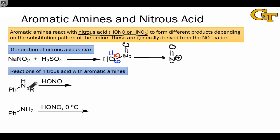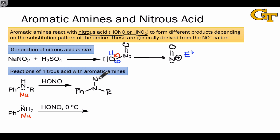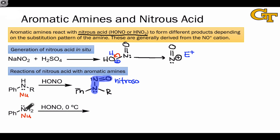When either a primary or secondary amine is treated with nitrous acid, we get products resulting from the interaction of the nucleophilic nitrogen atom with the electrophilic NO-plus cation. In the case of a secondary amine, we end up with a product containing a new nitrogen-nitrogen single bond and retaining the NO double bond — this functional group is known as the nitroso group. In the case of the primary amine, the nitrogen has two hydrogens, and the ultimate product is a diazonium ion.